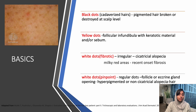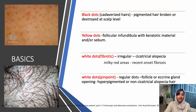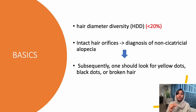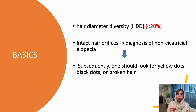These are the dermoscopic images of yellow dot as well as a black dot. Another important factor is hair diameter diversity. In a normal scalp, there will be a variation in hair diameter of less than 20%, but in a pathological condition this goes to more than 20%.